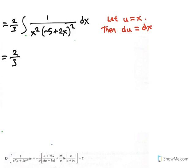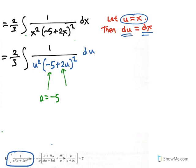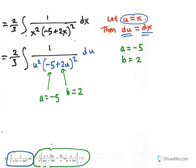Although a u substitution isn't strictly necessary here, we can let u = x, so du = dx, giving 1 over (u squared times (negative 5 plus 2u) squared) du. This matches rule number 13 exactly. We note that a = negative 5 and b = positive 2, and we will apply rule number 13.